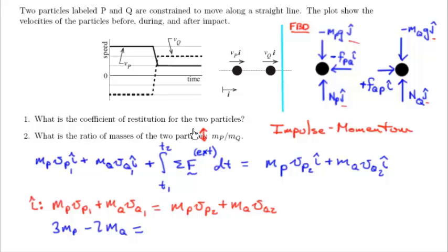So I've got mp times vp2, looks like vp2 is a positive 1. So this becomes 1 mp plus, and it looks like vq is 2, plus 2 mq.